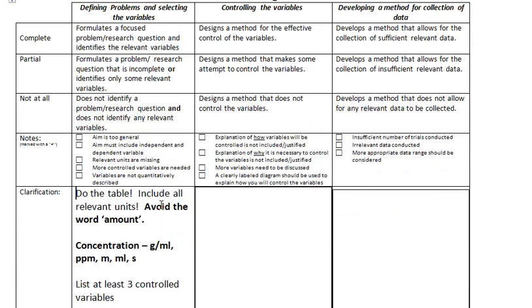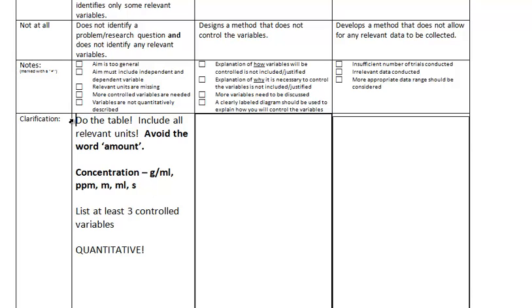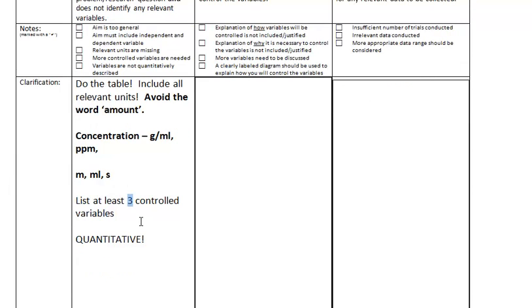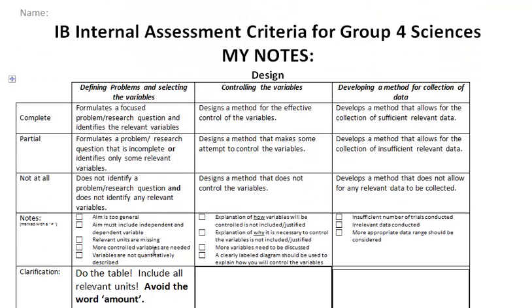Okay, anything else left to be underneath here? Do the table as I've just shown you. The table is provided in the sample template. Include all relevant units. Avoid the word amount. Use things like volume, mass, the number of. Don't say amount. Concentration can be expressed in grams per milliliter, parts per million. There's various other ways. That's not concentration. Just make sure you have your units correct. At least three controlled variables. I'm updating that to five, not percentage. And make sure everything is quantitative as well.